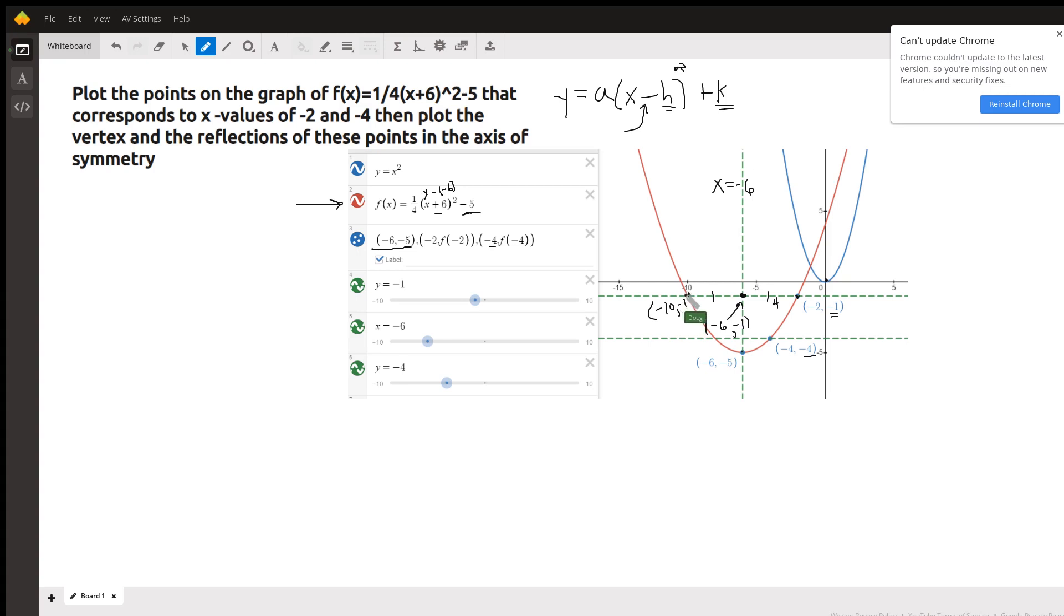And you could use the midpoint formula to actually find the coordinates to that point, or you can just count squares. And similarly, down here, the distance from negative six, negative four, to this x-coordinate negative four, that's two units. So two units to the left of negative six would be negative eight. So negative eight, negative four would be the other endpoint of this segment that has the axis of symmetry as actually a perpendicular bisector.